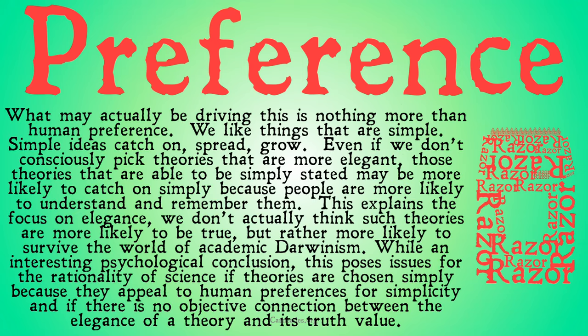What may actually be driving this is nothing more than human preference. We like things that are simple. Simple ideas catch on, they spread, they grow. Even if we don't consciously pick theories that are more elegant, those theories that are able to be simply stated may be more likely to catch on simply because people are more likely to understand and remember them. Therefore, more people will remember them, say them, write them down, and tell other people about them. This explains the focus on elegance — because we don't actually think that these theories are more likely to be true, but rather they're more likely to survive the world of academic Darwinism.